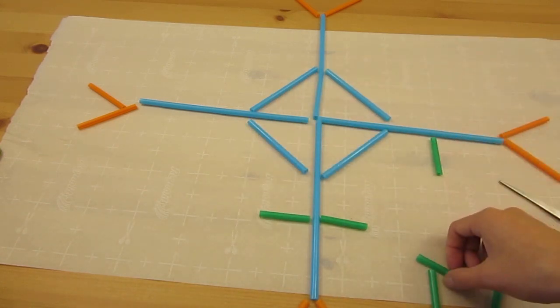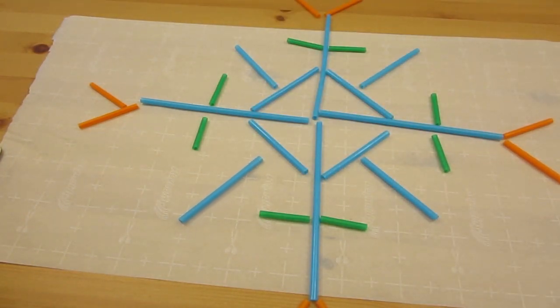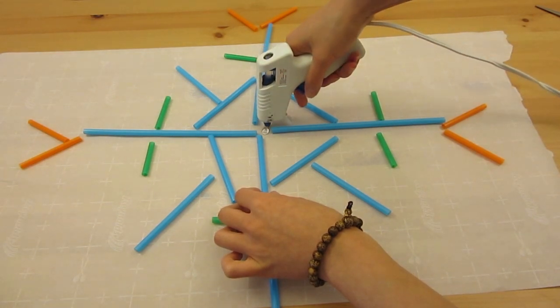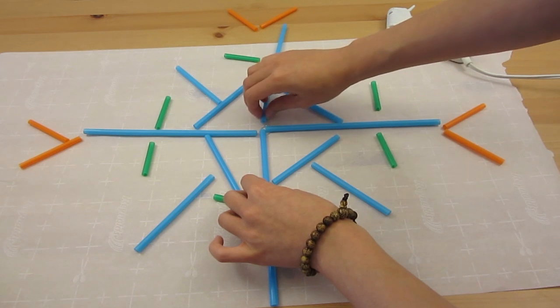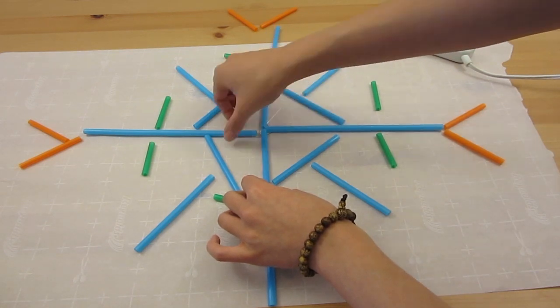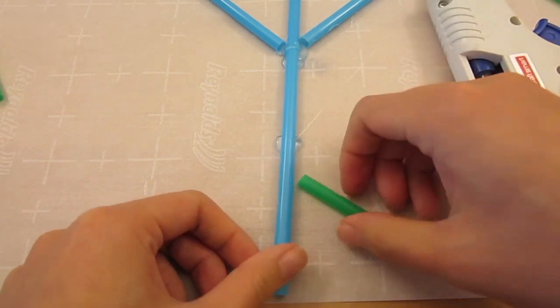Once you are happy with your design, we are going to go ahead and glue everything in place. Squeeze a dab of hot glue onto the parchment paper and secure the straws in place by placing it onto the hot glue. Do the same thing for all the parts and let it dry.